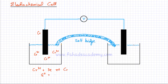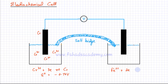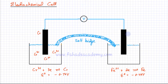The second electrode I'm choosing is the Fe²⁺/Fe electrode: Fe²⁺ plus two electrons forming iron, with an E° value of −0.44V. This electrode is made of iron and the solution contains Fe²⁺ ions at a concentration of 1 mol/dm³.